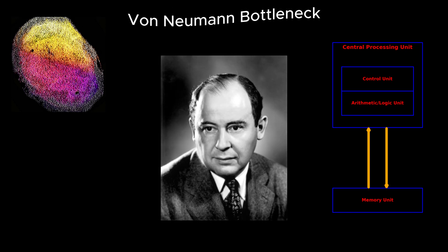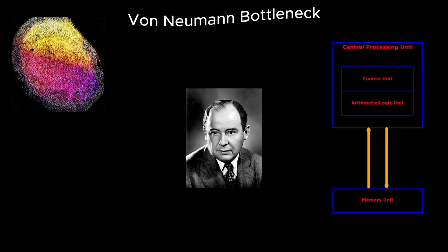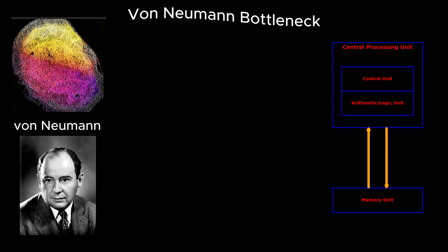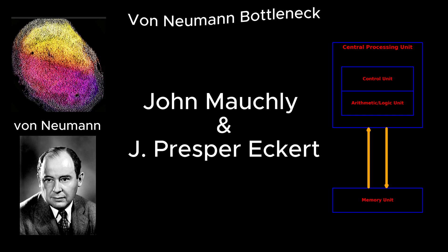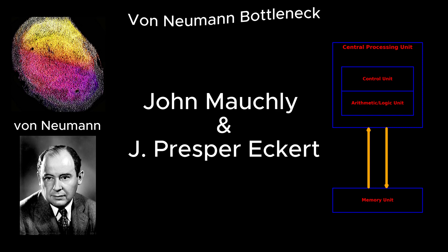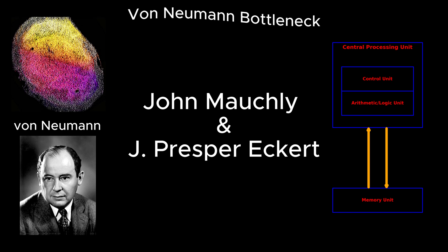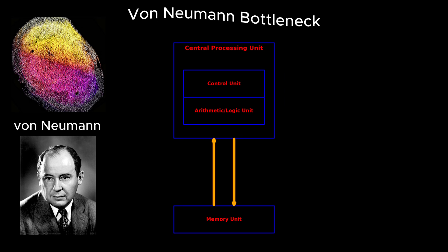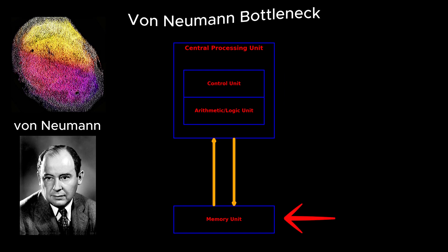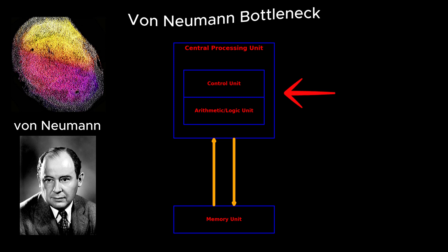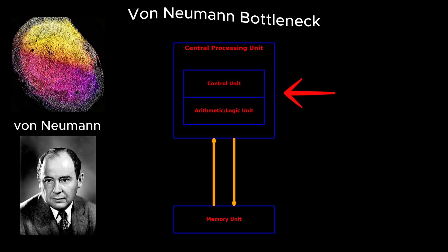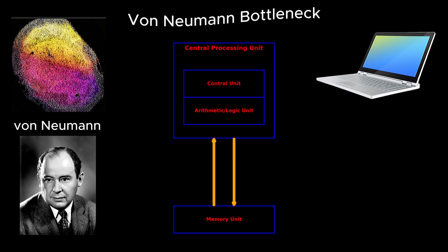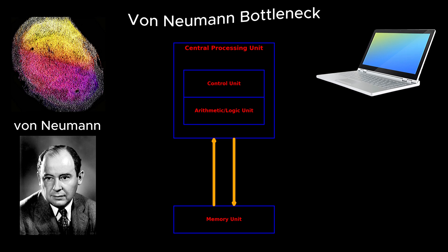John von Neumann was a brilliant mathematician and physicist whose work laid the foundation for modern computing. In the mid-20th century, after discussing computer designs with John Mauchly and J. Presper Eckert at the University of Pennsylvania's Moore School of Electrical Engineering, von Neumann proposed a revolutionary architecture for computers, where a single memory stores both instructions and data, and a central processing unit, CPU, sequentially fetches, decodes, and executes instructions. This became the blueprint for nearly all computers today and is known as the von Neumann architecture.